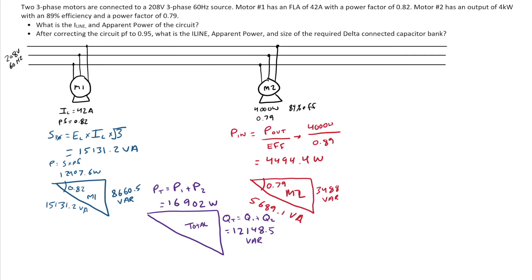Now again, trusty Pythagorean's theorem. My favorite. I'm going to go S total equals P squared plus Q squared. That's going to give me an S of 20,815 VAR. And that is the apparent power for the entire circuit.